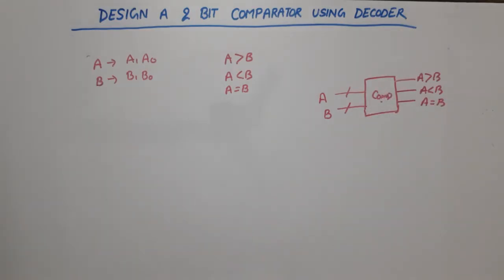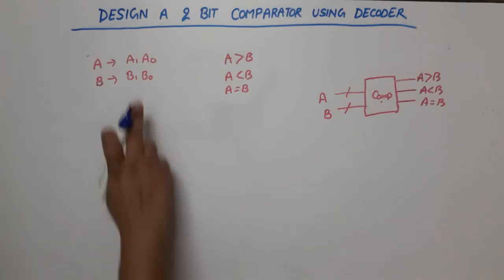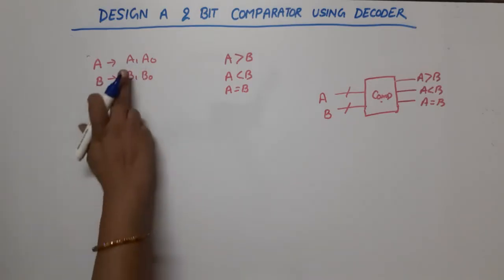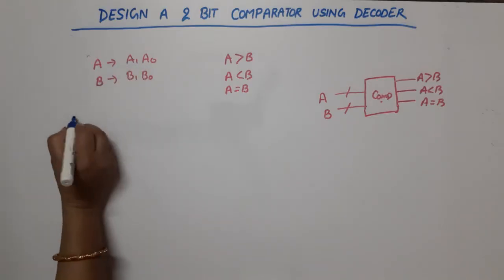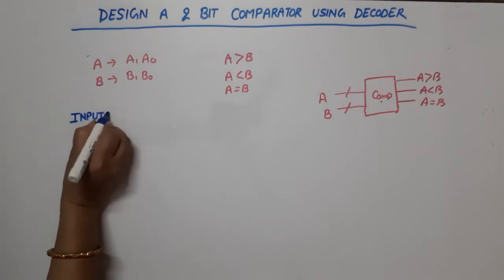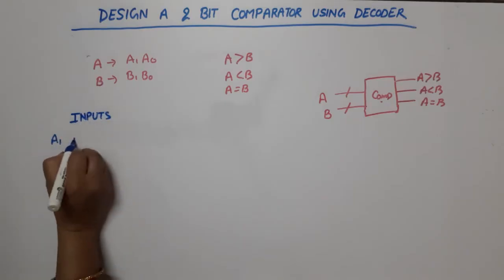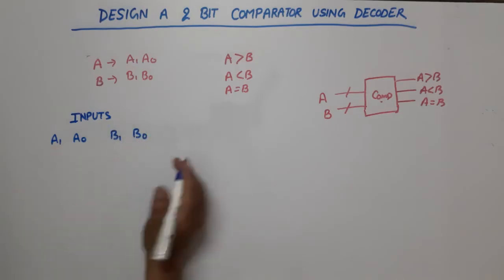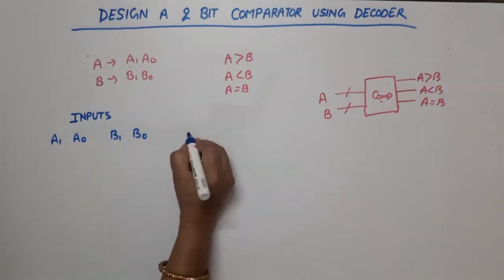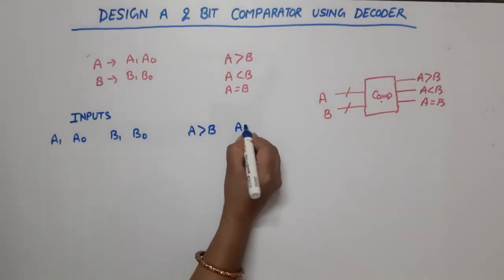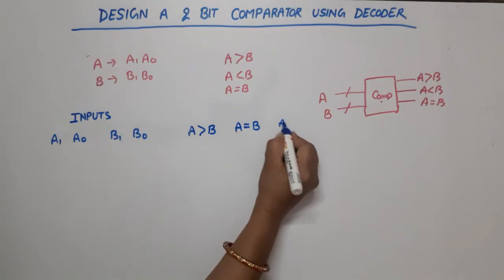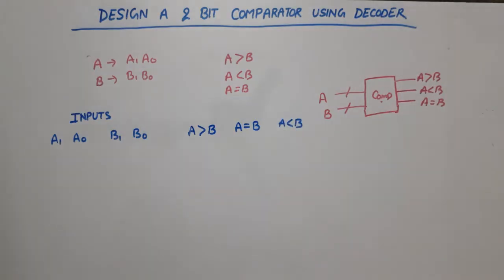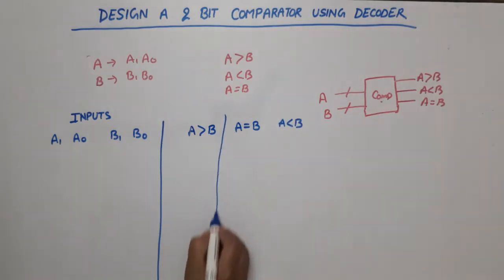Now we will draw the truth table. Every number contains two bits. So the inputs are A1, A0, B1, B0. How many outputs are there? Three: A greater than B, A equal to B, and A less than B. These are our inputs and outputs.